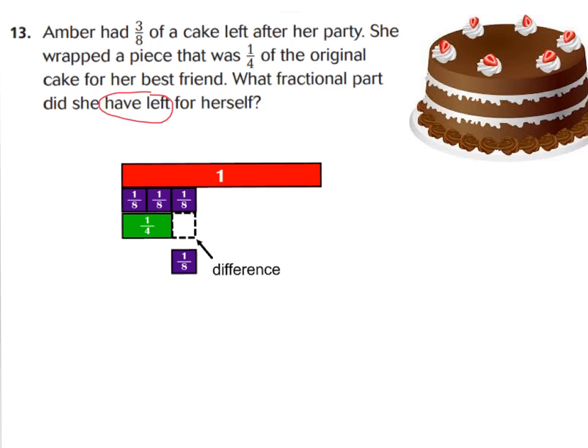What fraction did she have left for herself? I may go ahead and circle have left. So, that way it reminds me, I'm going to see what's left over. And, that means that we're subtracting. Because, we took away 1 fourth of her 3 eighths. Now, we know 8 and 4 are different denominators. But, if I listed my denominators for 4 and for 8, the least common multiple is 8. So, therefore, we can say, let's do it all in 8ths.